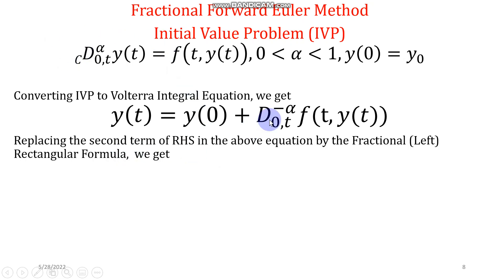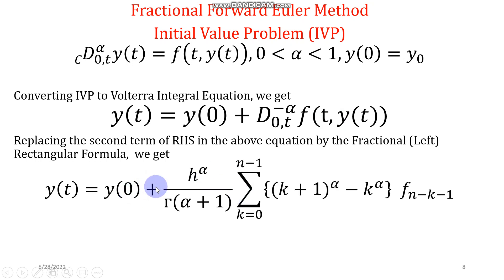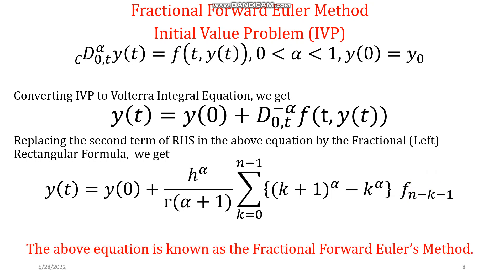If I replace this second term in this equation, where I am moving the cursor, if I replace it by the fractional rectangular formula that we have just derived, then you will have this last equation. And this last equation is what we call the fractional forward Euler's method.